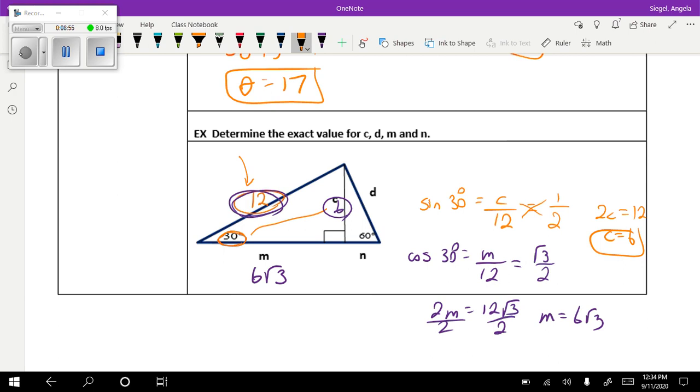So now we can transition. Now that we have this 6 here, we can transition over to this triangle. So go ahead and see if you can do that.